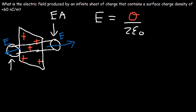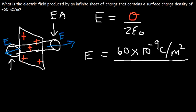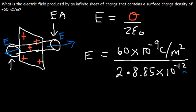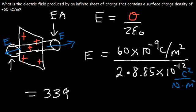So now let's finish the problem. We have the surface charge density of 60 nanocoulombs, which is 60 times 10 to the minus 9 coulombs per square meter, divided by 2 times epsilon-naught, which is 8.85 times 10 to the minus 12. The units for epsilon-naught are coulombs squared divided by newtons times square meters. The answer is 3,390 newtons per coulomb. So this is the electric field produced by this infinite sheet of charge.